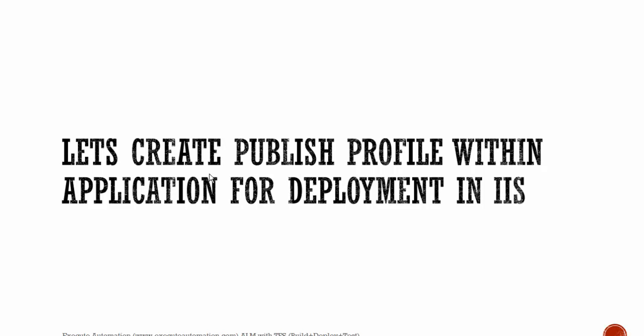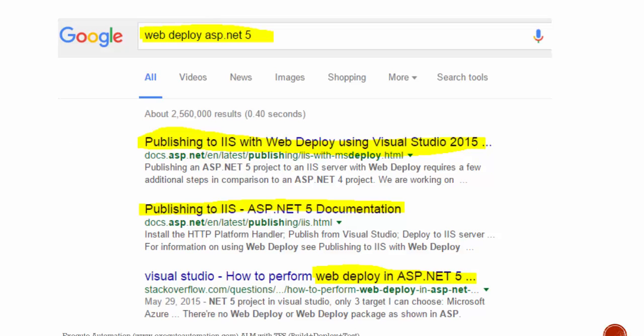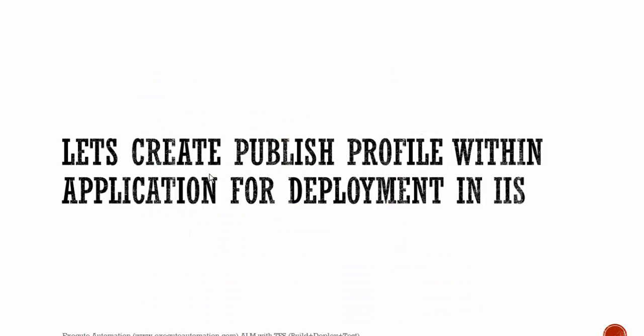Now let's create a vNext build definition in Team Foundation Server 2015 web edition. Before doing that, the most important prerequisite is to create a publish profile within our application for deploying to IIS. Without a publish profile, deploying the application would be very difficult. If you're unfamiliar with web application deployment for ASP.NET using a publish profile, you can search Google and find many articles on it.